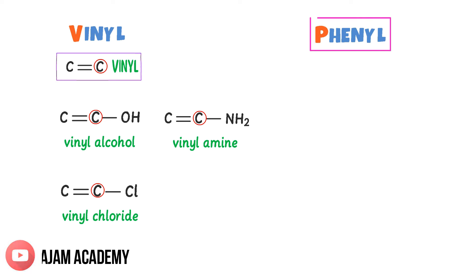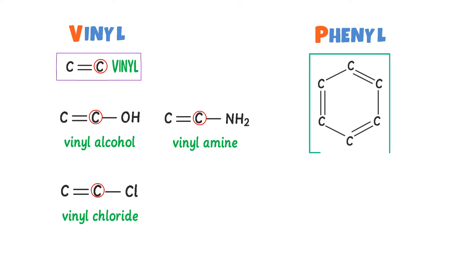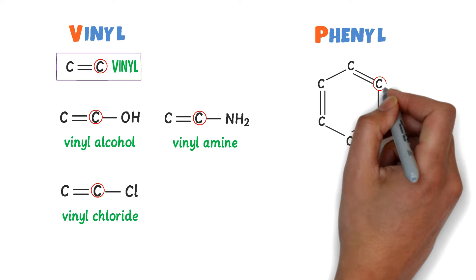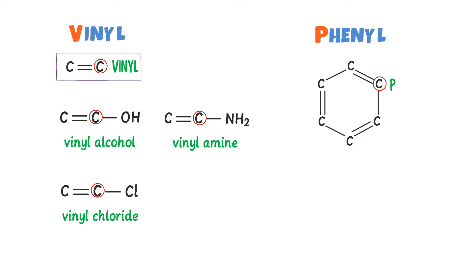Now what about Phenyl? I draw the structure of benzene. We know that in a benzene ring there are 6 carbon atoms having alternate single and double bonds. We also know that a carbon directly on the double bond is a Vinyl carbon. But here, due to the benzene ring, it is known as Phenyl.